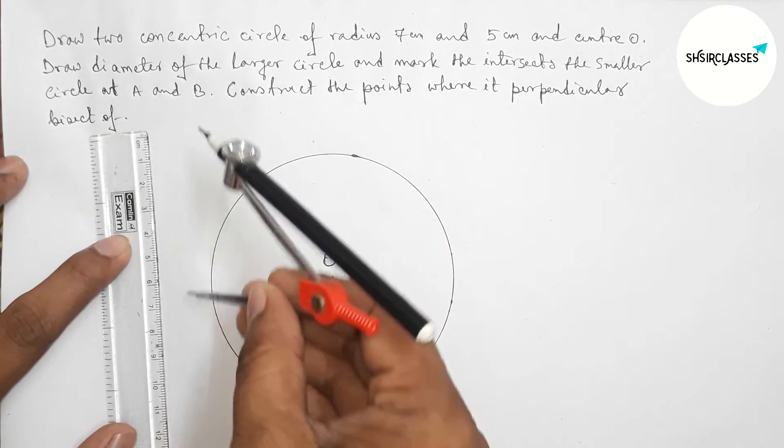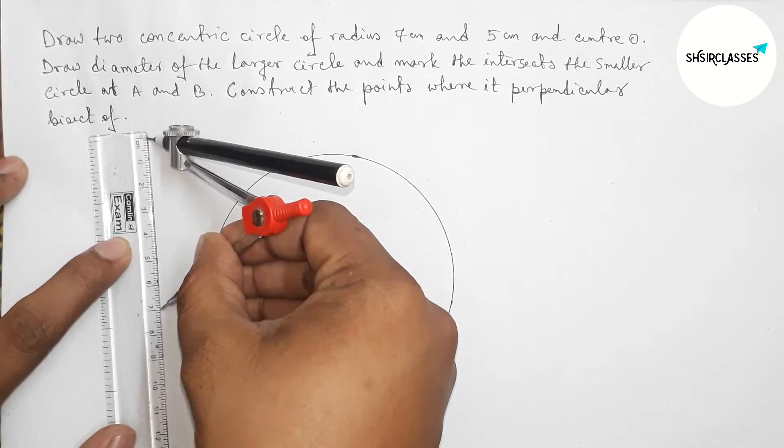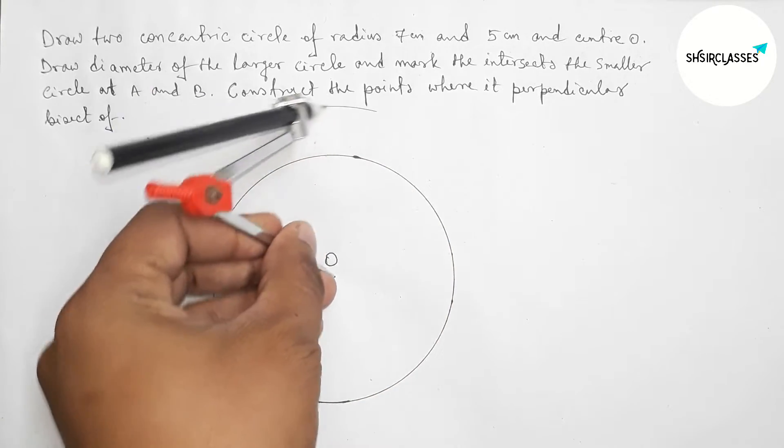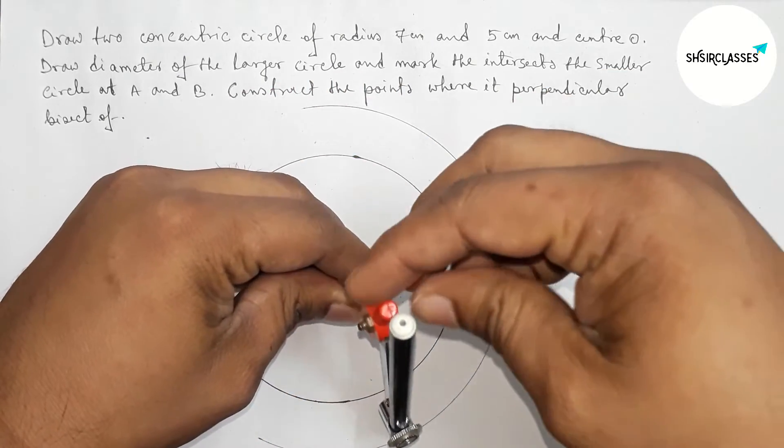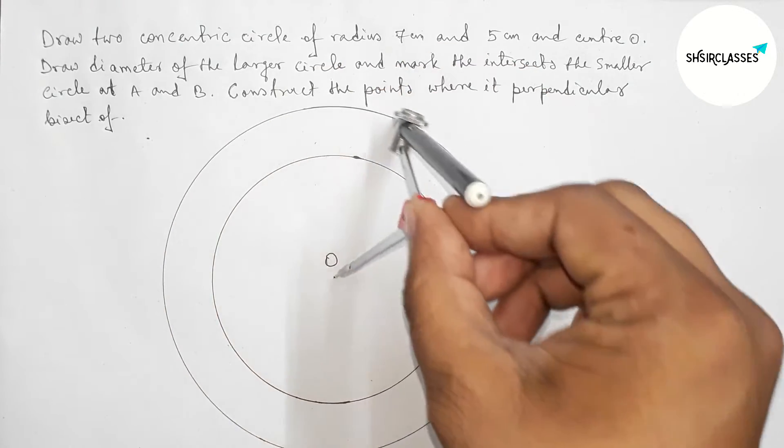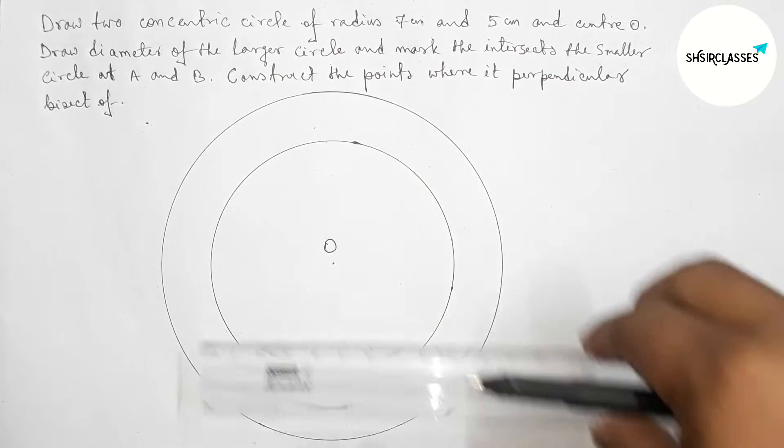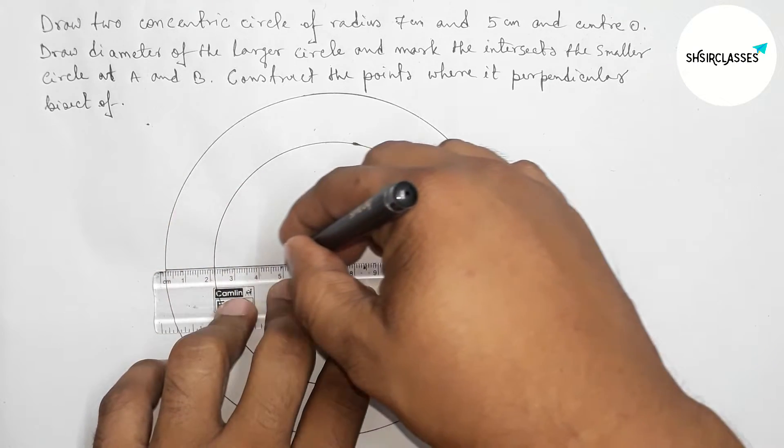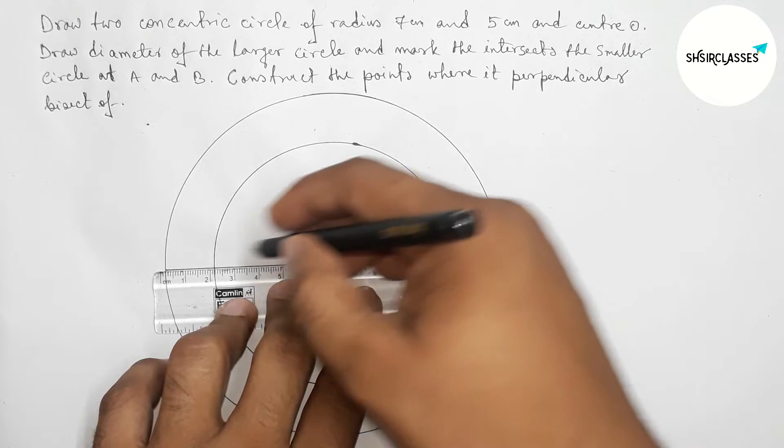This is 7 centimeters. Now putting the compass on point O and drawing another circle with radius 7 centimeters. Now joining the diameter of the larger circle.